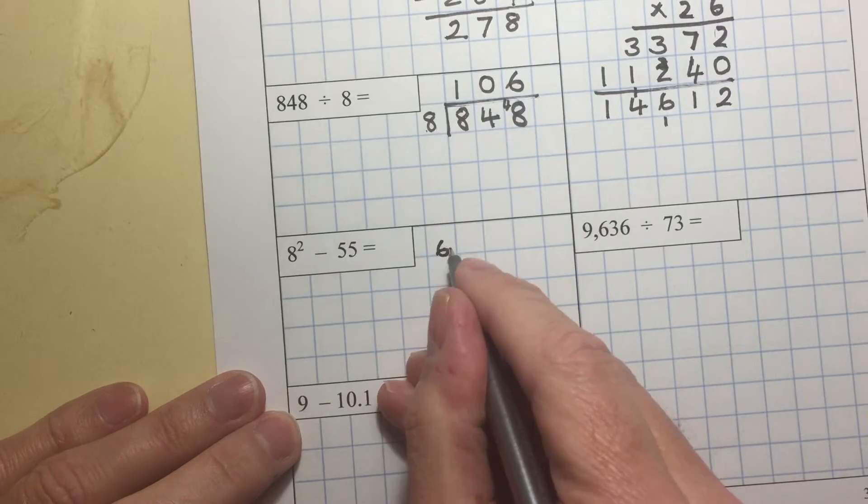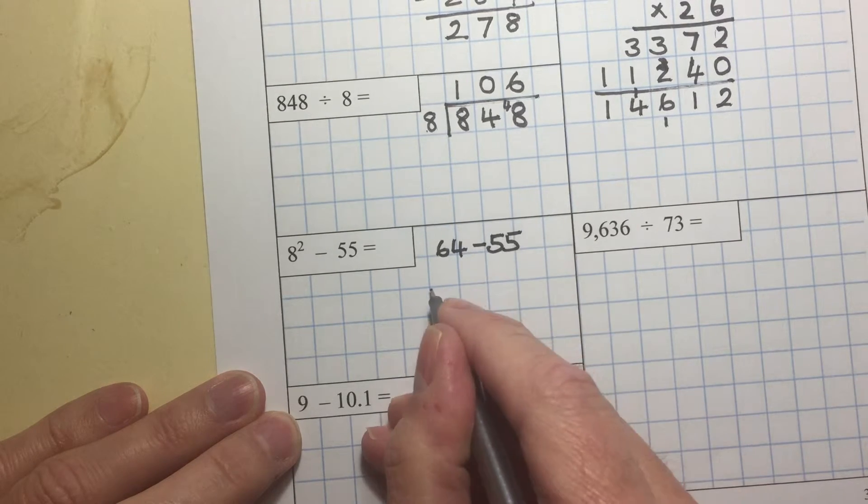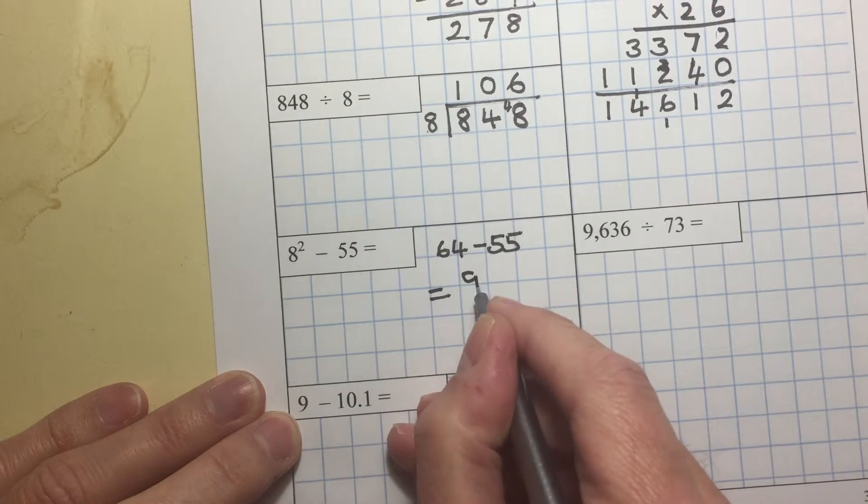8 squared is 64. So it's 64 take away 55. 64 take away 55 is 9.